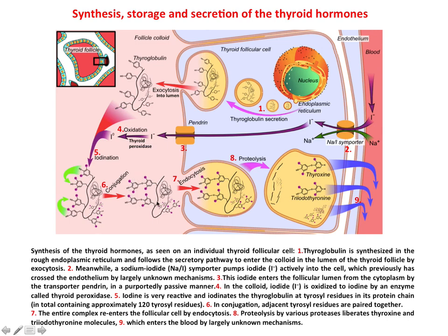This thyroglobulin along with iodinated tyrosine can enter inside the cytoplasm of the follicular cell by endocytosis. Inside the cytoplasm, proteolysis takes place — the thyroglobulin molecule is cleaved and finally T4 and T3 are released. They can then be secreted into the bloodstream by an unknown mechanism. Thus you can see how synthesis of T3 and T4 takes place, and finally they are secreted into the blood.